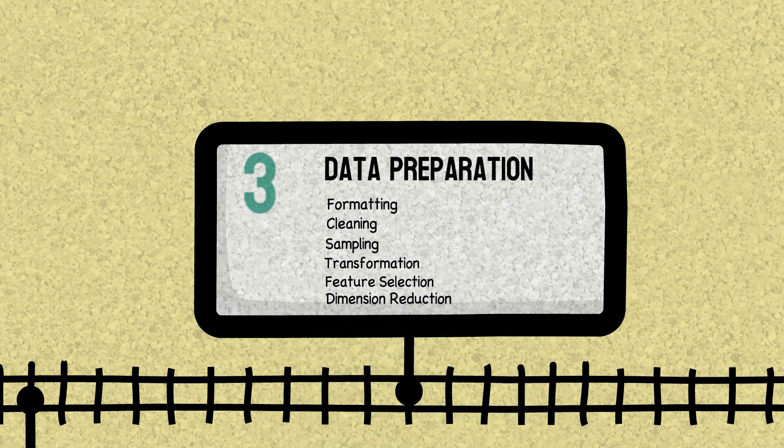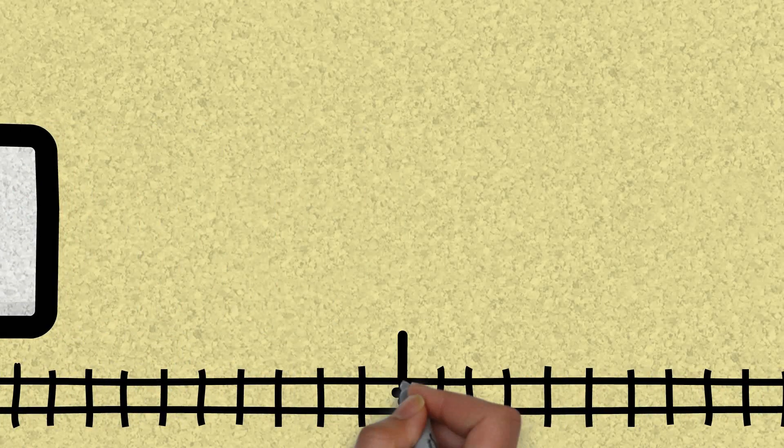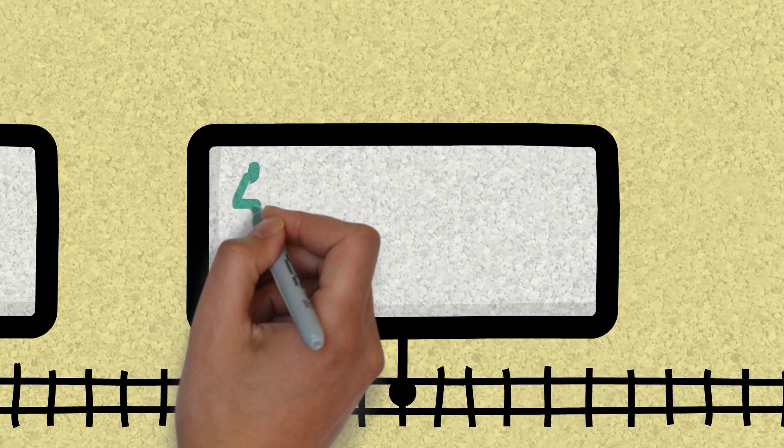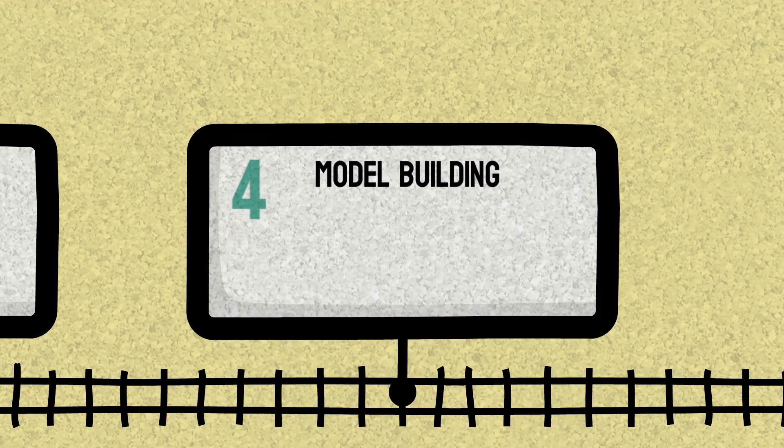After this we check for the dimension also. So again after dropping some features we have got a huge number of variables. Then in that case we will go ahead with the dimension reduction technique where we reduce the number of columns, we reduce the number of variables without losing much information. One such example is PCA, principal component analysis. Now after this once we get the data in a proper format we go ahead with building model.